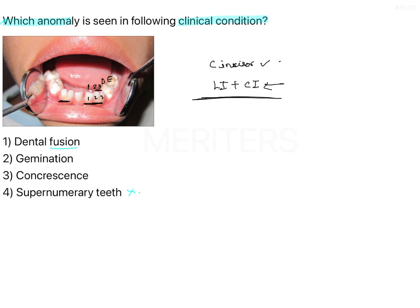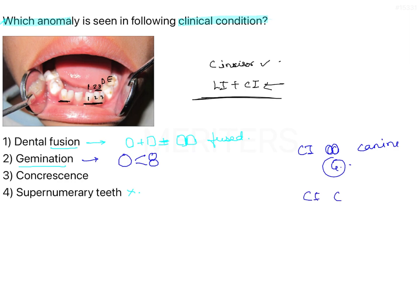Now let's talk about fusion and germination. In fusion, two teeth are physically combined with each other and they look like two units fused together. In germination, however, one single tooth splits into two entities which are merged together. So if it were a central incisor and two lobules of lateral incisor and canine, that would be germination. But here it is central incisor and lateral incisor and canine — so this is fusion.